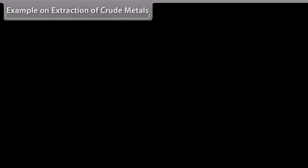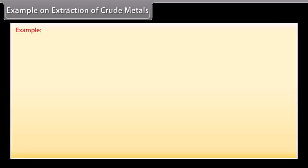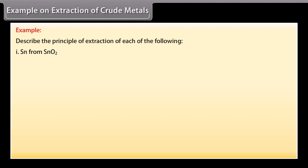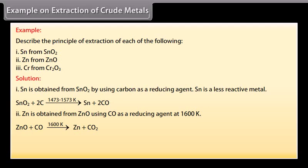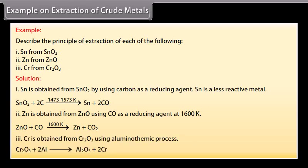Example on extraction of crude metals. Let's take an example on extraction of crude metals. Describe the principle of extraction of each of the following: Sn from SnO2, Zn from ZnO, Cr from Cr2O3. Let's see the solution. Sn is obtained from SnO2 by using carbon as a reducing agent. Sn is a less reactive metal. Zn is obtained from ZnO using CO as a reducing agent at 1600 Kelvin. Cr is obtained from Cr2O3 using aluminothermic process.